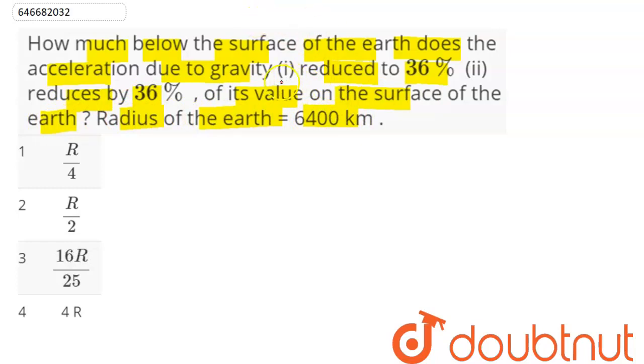So here we need to solve this first part reduce to 36% here. So suppose this is the earth and here we can say value of g at the surface is 9.8 meter per second square.